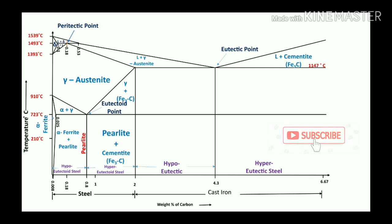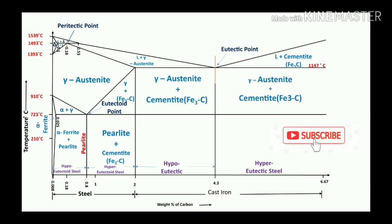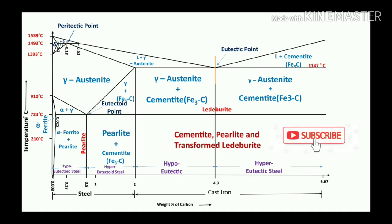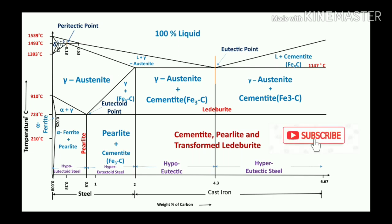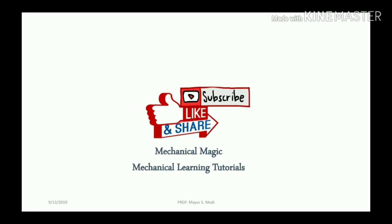Liquid plus gamma austenite and liquid plus cementite — cementite represents enrichment by carbon. In between, gamma austenite plus cementite is represented as ledeburite. At room temperature it transforms to cementite, pearlite, and ledeburite. Above the peritectic and eutectic reaction lines, it is 100% liquid for any composition of carbon with iron. That covers the iron-carbon diagram in the simplest way.